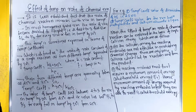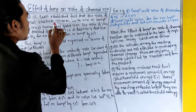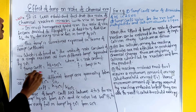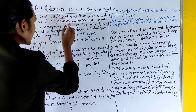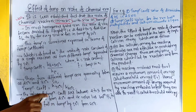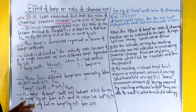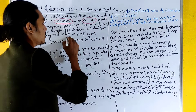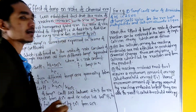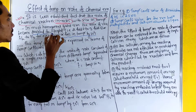It is a well-established fact that the rate of chemical reaction increases with rise in temperature. In most of the homogeneous gaseous reactions, the rate of reaction becomes doubled for every rise or fall in temperature by 10 degrees Celsius, and the rate of reaction becomes doubled or tripled.